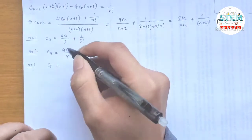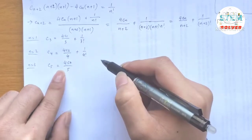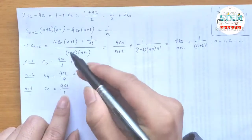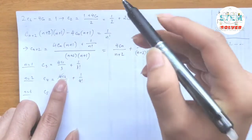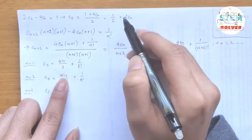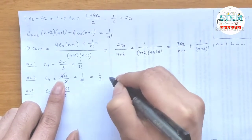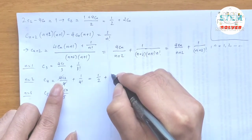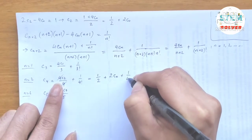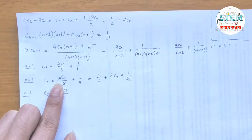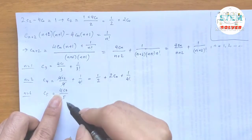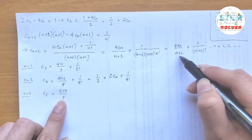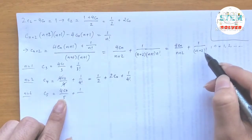When n=3: c₅ equals 4c₃/5 plus 1/5!. Now substituting c₂ = one-half + 2c₀ back into the c₄ expression: c₄ equals (one-half + 2c₀) + 1/4!. And substituting c₃ into c₅: c₅ equals 4/5 · (4c₁/3 + 1/3!) + 1/5!, which gives (16c₁/15) + 4/(5 · 3!) + 1/5!.